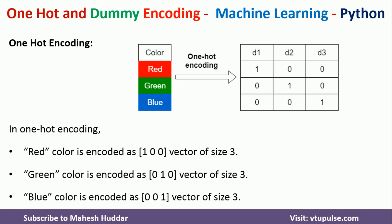Consider the color column with values red, green, and blue. After applying one-hot encoding we get three dummy columns: d1 for red, d2 for green, and d3 for blue. Whenever we get red, we put 1 in d1 and 0 in the other two. For green, we put 1 in d2 and 0 in the others. For blue, we put 1 in d3 and 0 in the remaining columns.